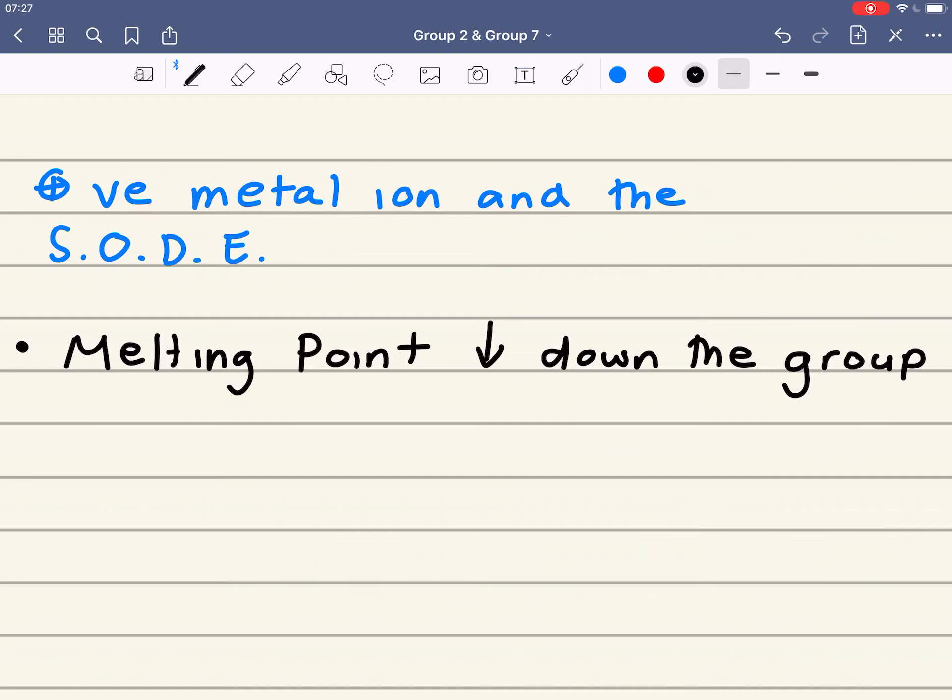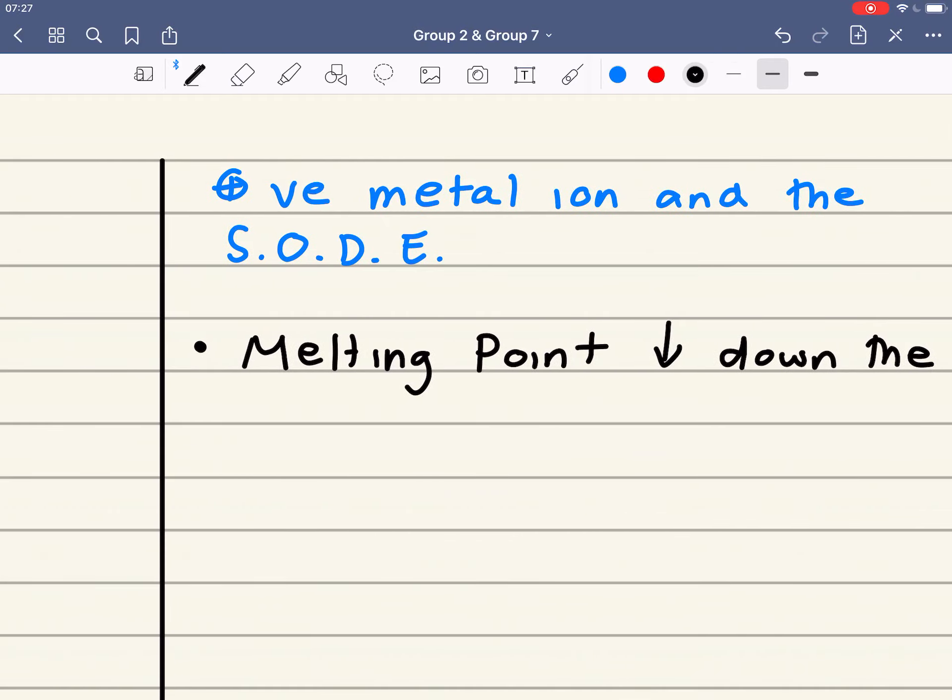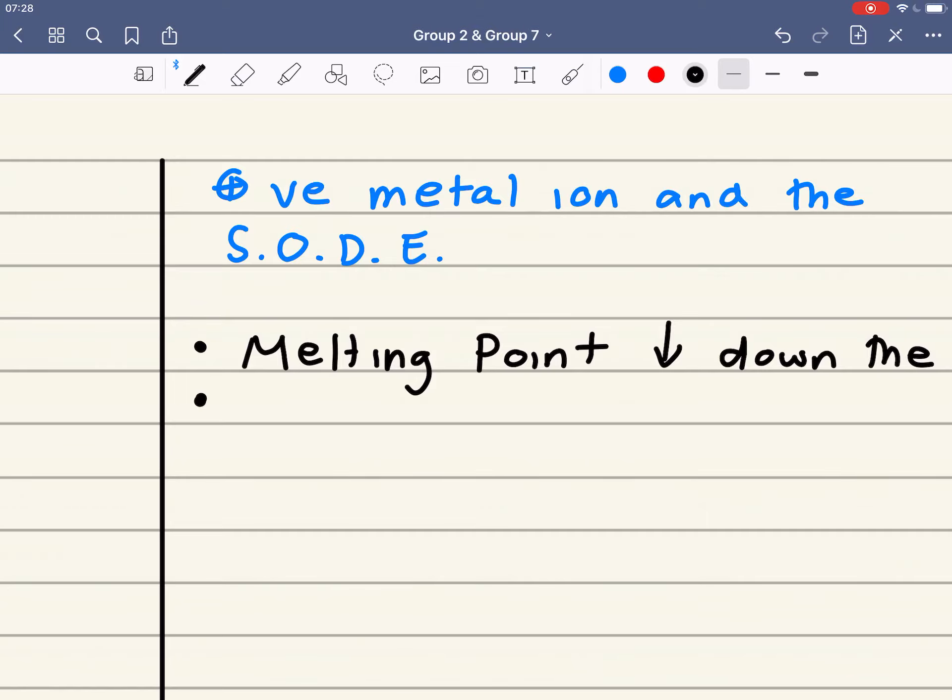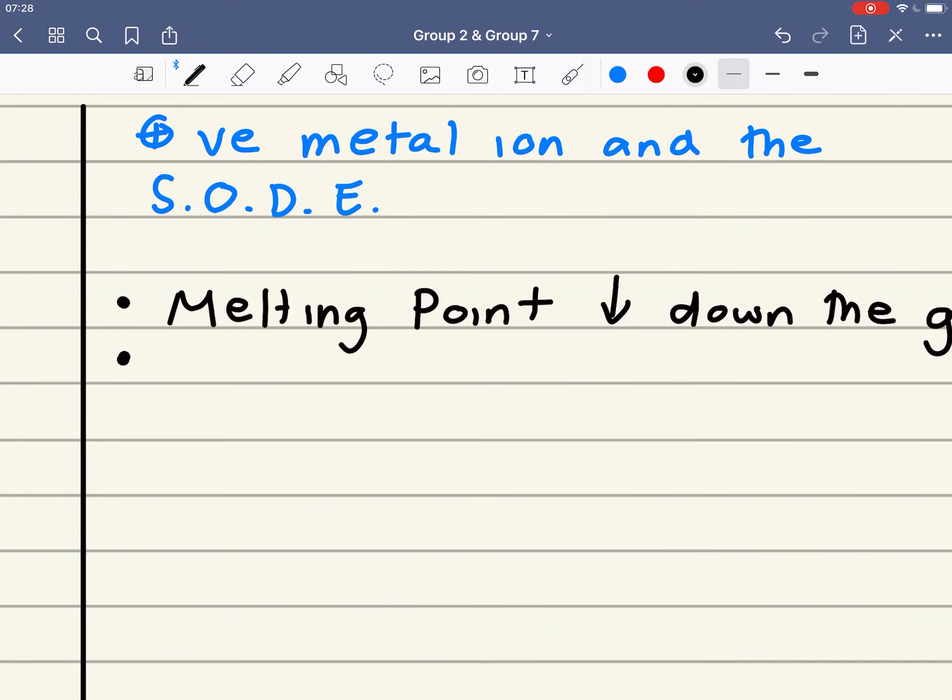So, we're stating the trend. Why is that? And, what affects the strength of metallic bonding? It's the number of delocalized electrons per atom and the size of the positive metal ion. Well, first thing to note is that the number of delocalized electrons is going to be constant for each element.